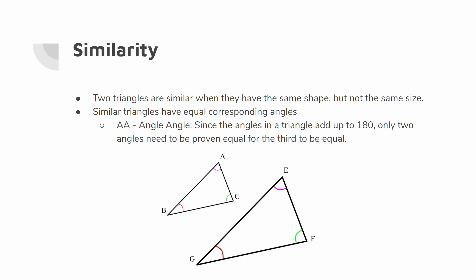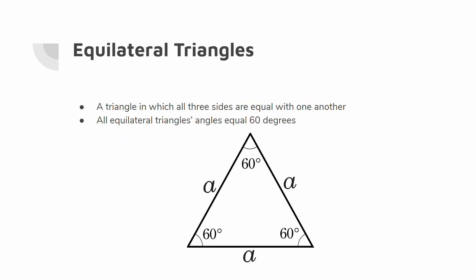We also need to talk about similarity. Two triangles are similar when they have the same shape but not the same size, meaning all sides are proportional and all angles are equal. To prove two triangles are similar, you just need to show all angles are the same. The angle-angle, or AA, property states you really only need two angles since all angles add up to 180 degrees. Finally, we want to remind you that equilateral triangles have all sides equal and all angles equal to 60 degrees.